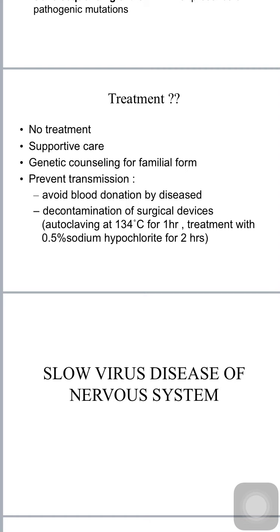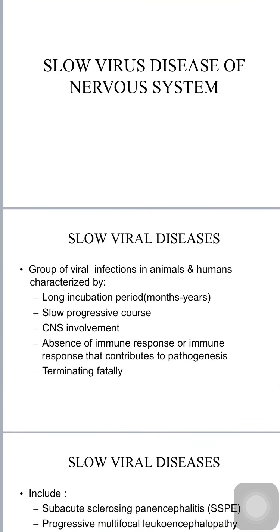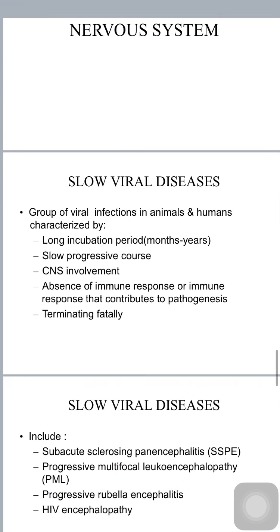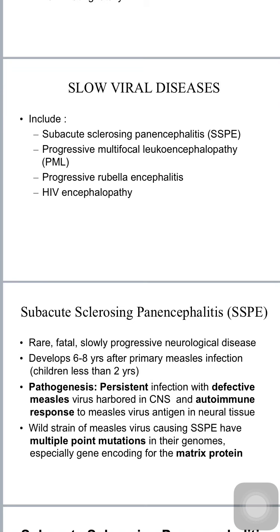Moving on to slow viral diseases of the central nervous system: these are a group of viral infections characterized by a long incubation period over months to years, predilection for the CNS, absence of immune or inflammatory response, and fatal termination. They include subacute sclerosing panencephalitis, progressive multifocal leukoencephalopathy, progressive rubella encephalitis, and HIV encephalopathy.